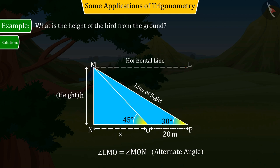Therefore, in both the above situations, the following figure is obtained. Since we have to find the height of the bird from the ground, let's discuss triangle MNP.